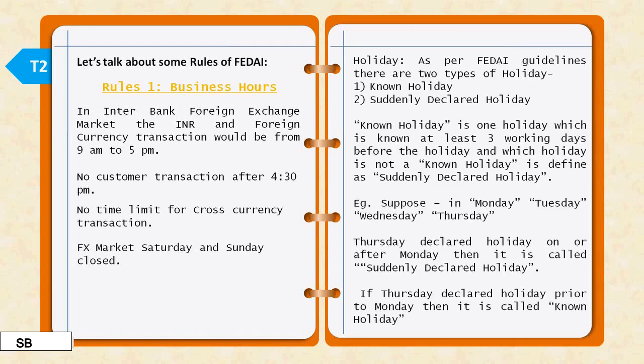The foreign exchange market is closed on Saturday and Sunday — these are two types of holidays. The guidelines for these two types of holidays are: one is called a non-holiday, and the other is a suddenly declared holiday. A non-holiday is a holiday that you know about at least three days before. A suddenly declared holiday is one that is not known three days in advance.